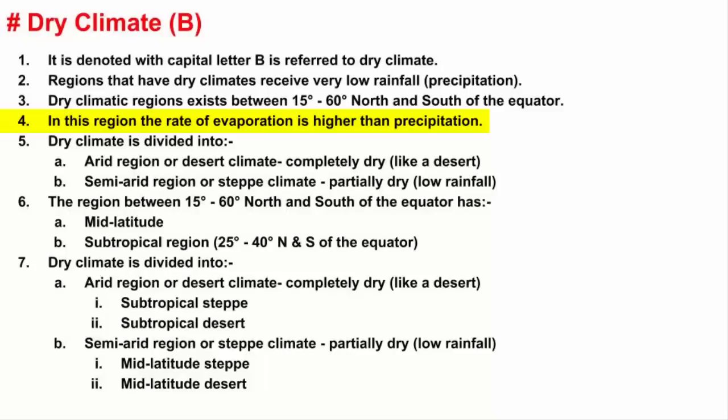I'll give you an example of that when we get to know about the divisions and subdivisions under dry climate. Dry climate is divided into arid and semi-arid regions. Arid means completely dry, where there is a severe lack of water. Semi-arid is partially dry, where rainfall is very low.